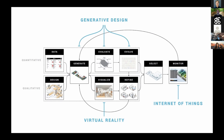If we have data on how a space is projected to be used — say a co-working space with data on who has signed up to use it the next day — and we combine that with knowledge of past usage patterns, we can start to generate designs that allow the space to be automatically reconfigured overnight to meet the needs of the people using it the next day. That's how we can think about this in a broader ecosystem.